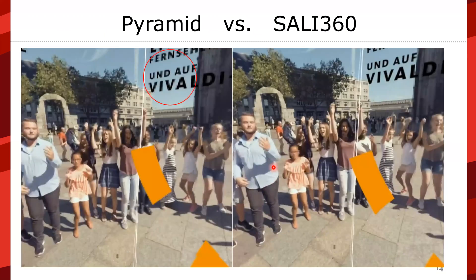Let's look at the content in the playing video of SALI360. The saliency regions highlight where users probably fixate — for instance, text or faces. On the left side, without saliency patches, the pyramid encoding is pixelized. On the right side, thanks to the saliency patches, it is full resolution. Look at the face of the dancers — SALI360 improves the quality of experience significantly.